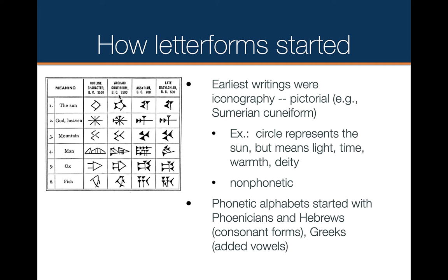If you look at this table, the first column shows how Sumerian cuneiforms looked about 5,500 years ago — you can see the abstraction. This looks like a Sun, these look like stars, these look like mountains, this looks like a person laying down, this looks like an ox, here's a fish. You can see there's enough correspondence between the symbol and what it represents. As these cuneiforms developed over time, about a thousand years later the archaic cuneiform became more abstract, until the late Babylonian period about 2,500 years ago. They're still visual symbols and still non-phonetic — they've just grown more abstract over time.